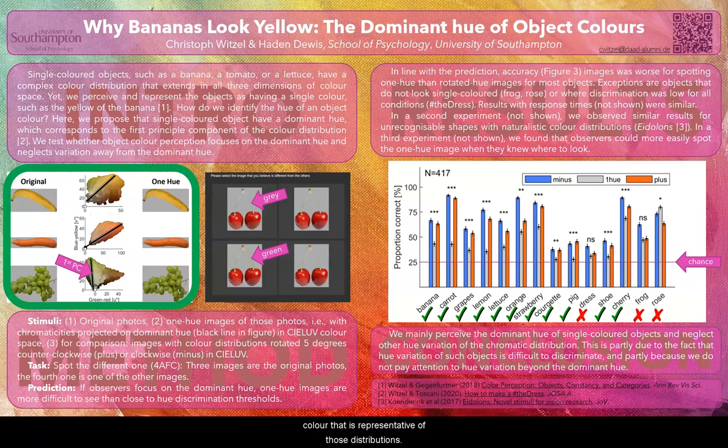We propose here that the distributions of all those single colored objects have a dominant hue that can be determined by the first principal component. The dominant hues are shown as the black lines in the figure.